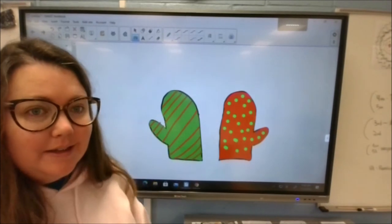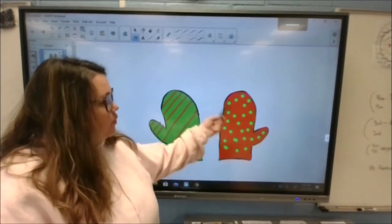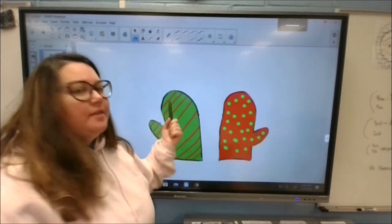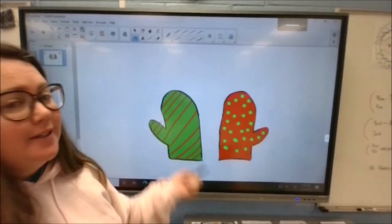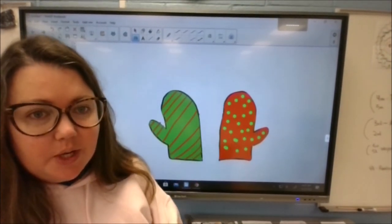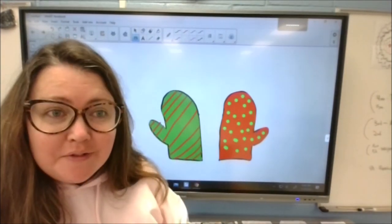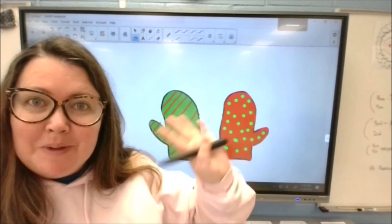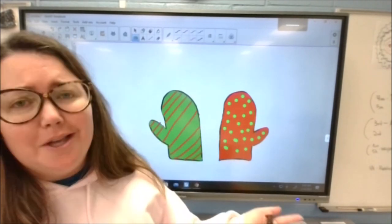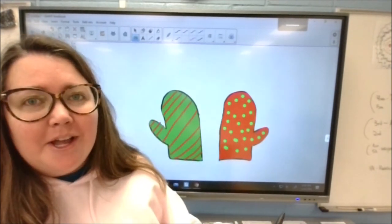All right. So I have my two mittens. I have one mitten that is red with green polka dots and one mitten that is green with red stripes. So see in each mitten, I have different colors and different patterns. So I encourage you to be creative. Come up with a really cool pattern and design for your mitten. Use lots of different colors because colors are fun. And just have fun.